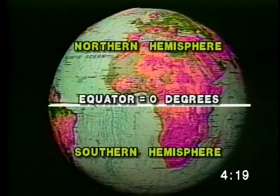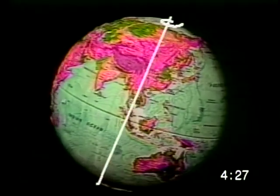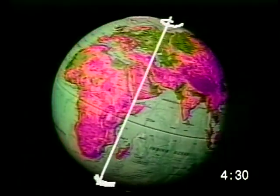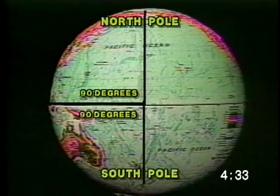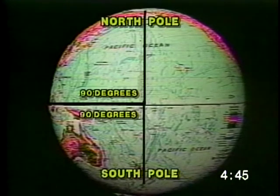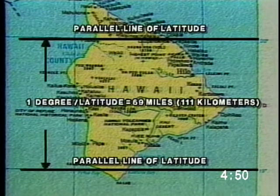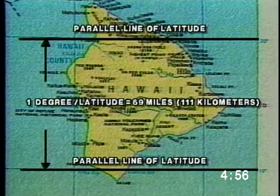The equator divides the Earth into two halves, or the northern and southern hemispheres. The poles are at the ends of the axis of the Earth, which is an invisible line about which the Earth rotates or spins. Latitude lines measure 90 degrees north and south of the equator, with the North Pole being 90 degrees north latitude, and the South Pole being labeled 90 degrees south latitude. Because lines of latitude are always an equal distance from the equator and from each other, they are known as parallels. Each degree of latitude is about 69 miles, or 111 kilometers.